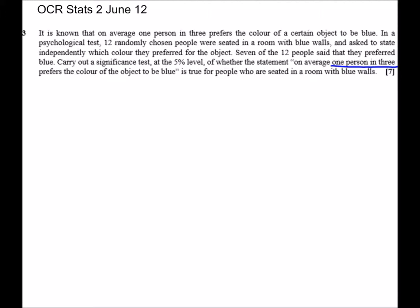So let's go back to the question. As it's a hypothesis test, the first thing that we need to do is write down our null and our alternate hypothesis. Our null hypothesis is, because it says on average one person in three prefers the colour of the object to be blue, we're going to say the probability of success P equals a third. And my alternate hypothesis is that the probability of success is not equal to a third. So this is going to be a two-tailed test.